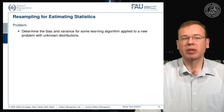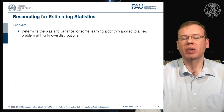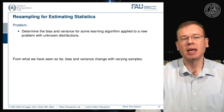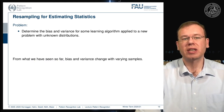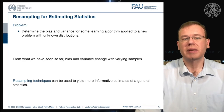The problem is that we want to determine the bias and variance for some learning algorithm, and of course we want to estimate its performance on data that we have not seen yet. Bias and variance will change with varying samples, so we will need resampling techniques that can be used to create more informative estimates of general statistics.